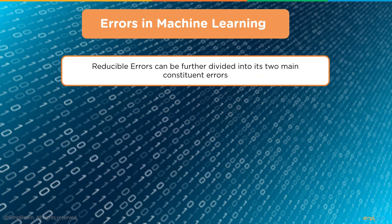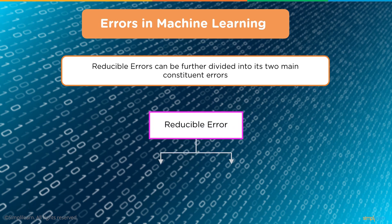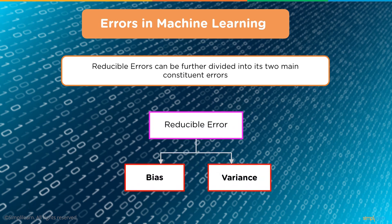Reducible errors are those whose values can be further reduced to improve a model. They are caused because our model's output function does not match the desired output function and can be optimized. Reducible errors can be further divided into two main constituent errors: bias and variance.